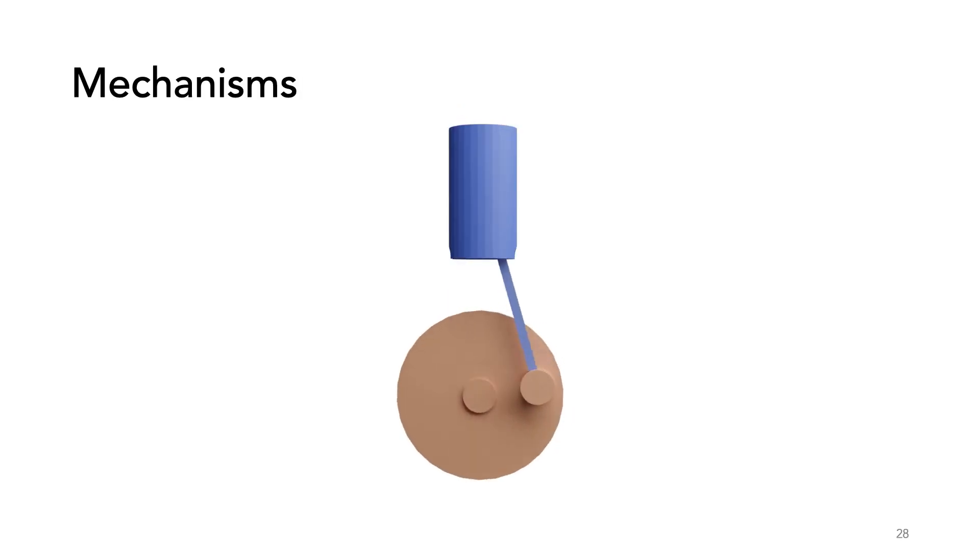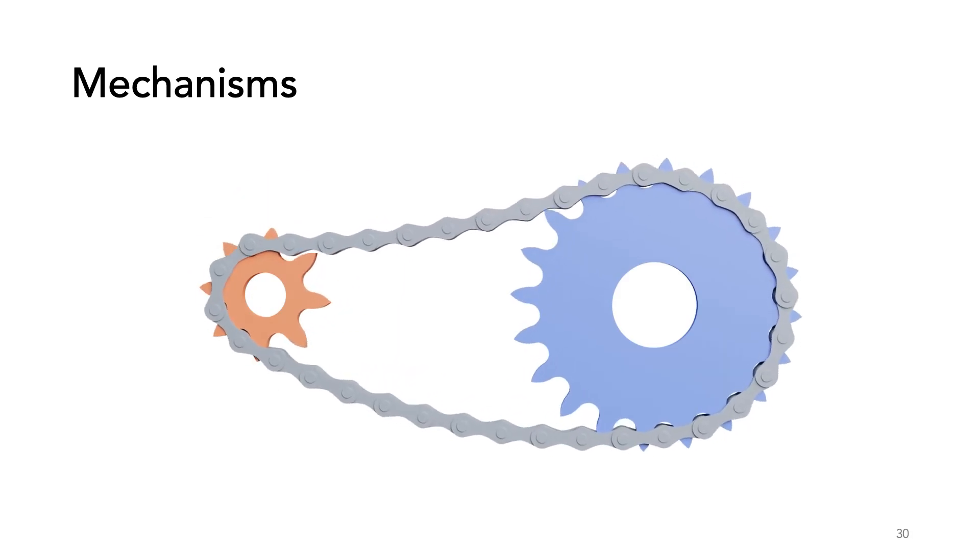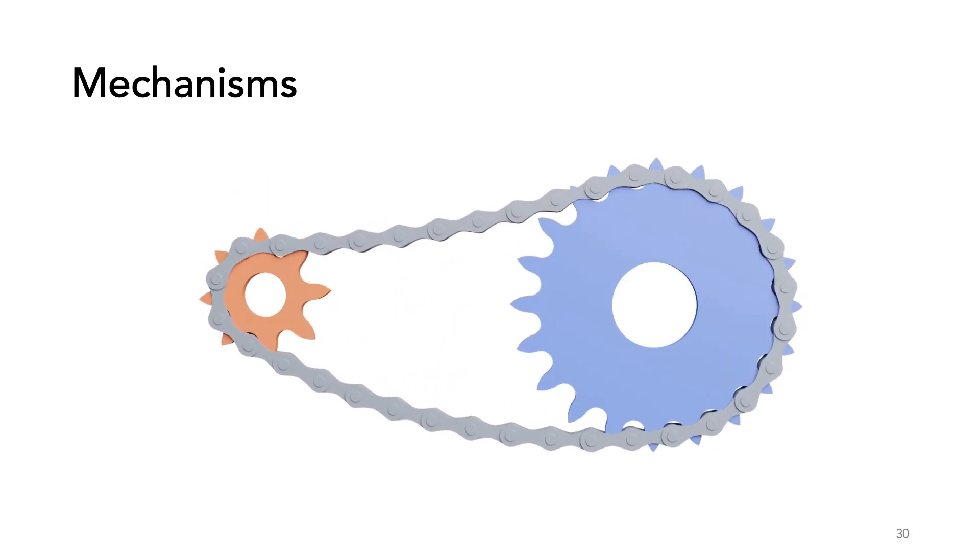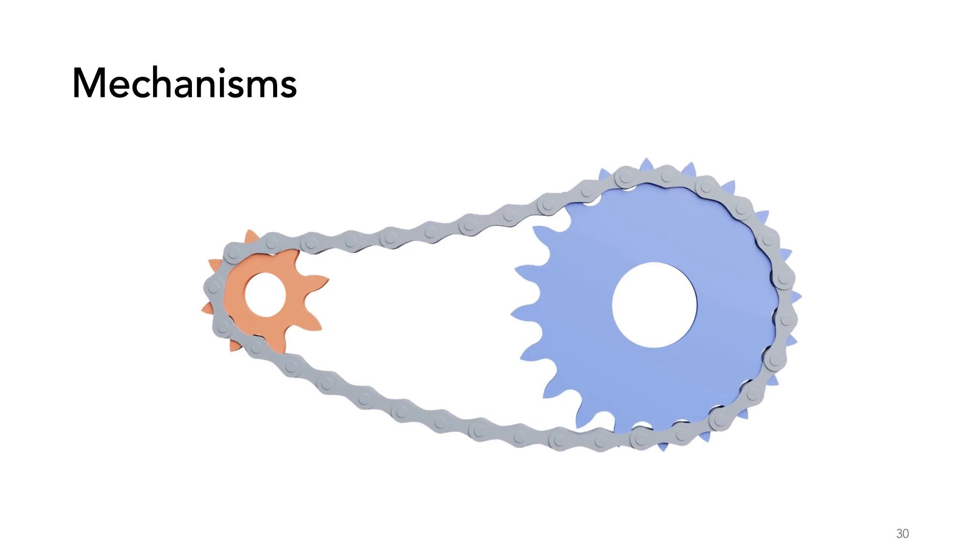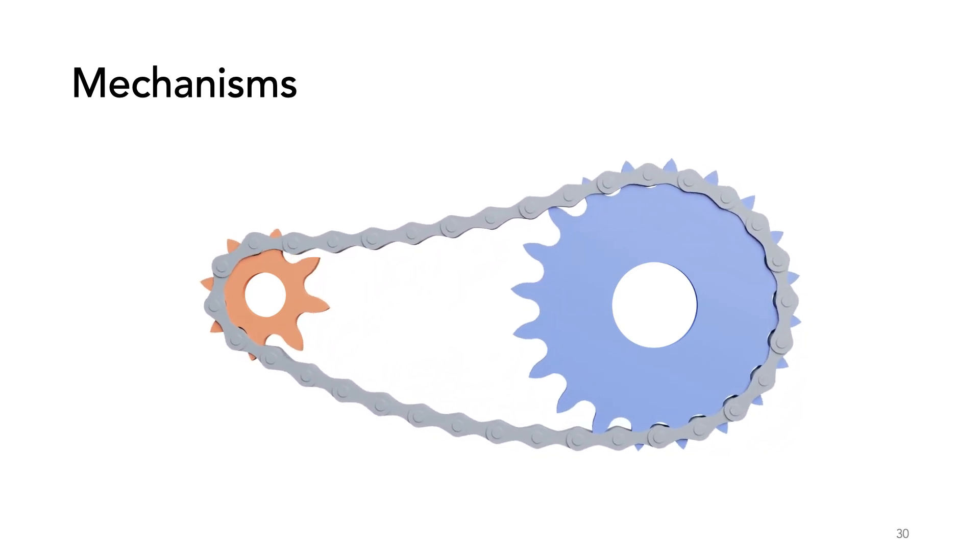Now let's take a look at some results. We can easily simulate different mechanisms. For example, this piston features tight gaps that pose no problem for our method. We can also handle complex geometry with multiple moving pieces. This bike chain is particularly interesting as each link is realistically composed of links and bearings. There is no need for articulated constraints.